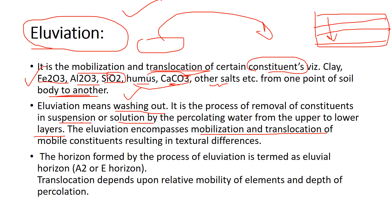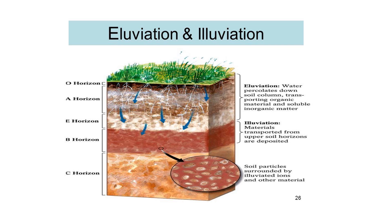Eluviation encompasses mobilization and translocation of mobile constituents, resulting in textural differences. As shown in the image, water percolates down through the soil column, transporting organic material and soluble inorganic matter — carbonates, ferrous oxide, silicon dioxide — from upper to lower layers. This results in the formation of various colored layers or distinct soil horizons.